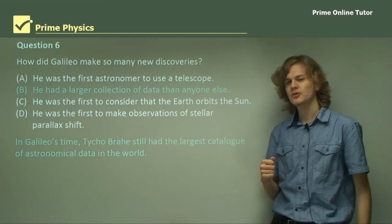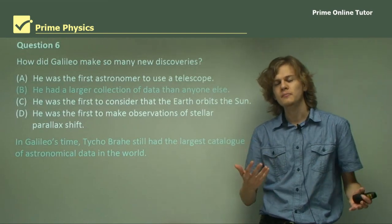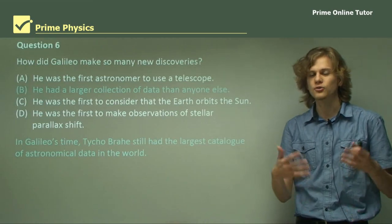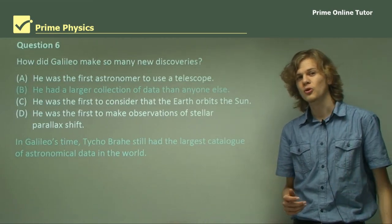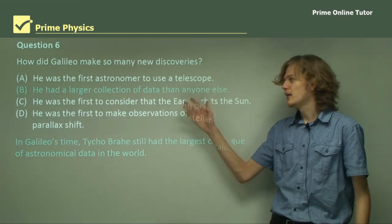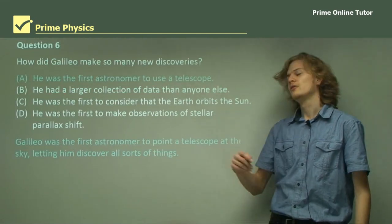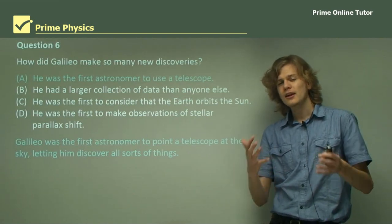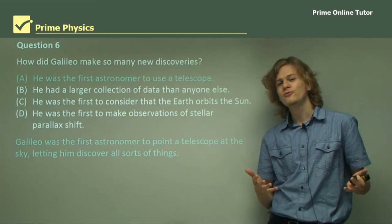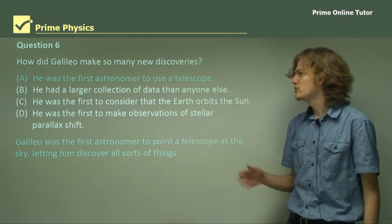Option B: he had a larger collection of data than anyone else. From our last section, we know that at that time in the early 17th century, Tycho Brahe had the largest collection of astronomical data in the world — gathered without a telescope — and it was far larger than the data Galileo had. So the answer is A: he was the first astronomer to use the telescope. Given that his observations were made only about a year after the telescope was invented, Galileo was among the first ever to look at the sky using one, and that is why A is the right answer.